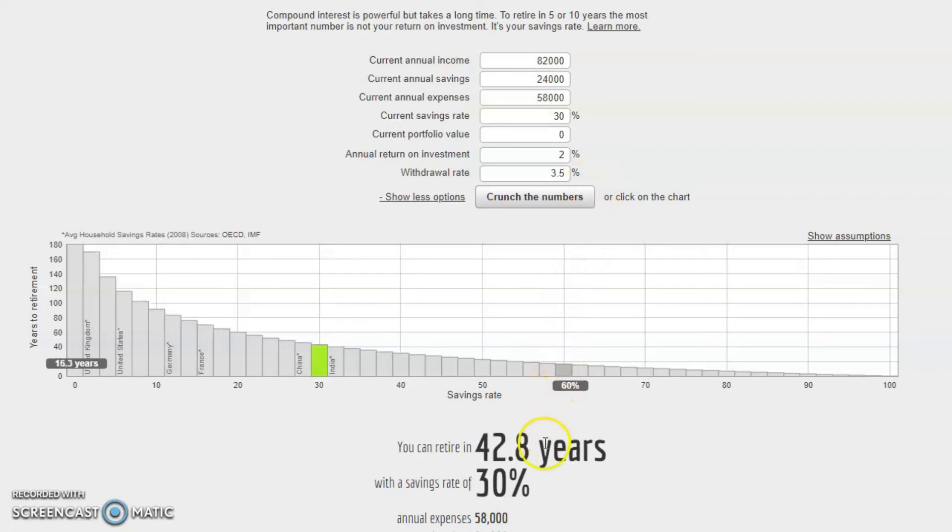With a 3.5% withdrawal rate, and all of the other assumptions shown above, the estimate at the bottom again increases as expected.